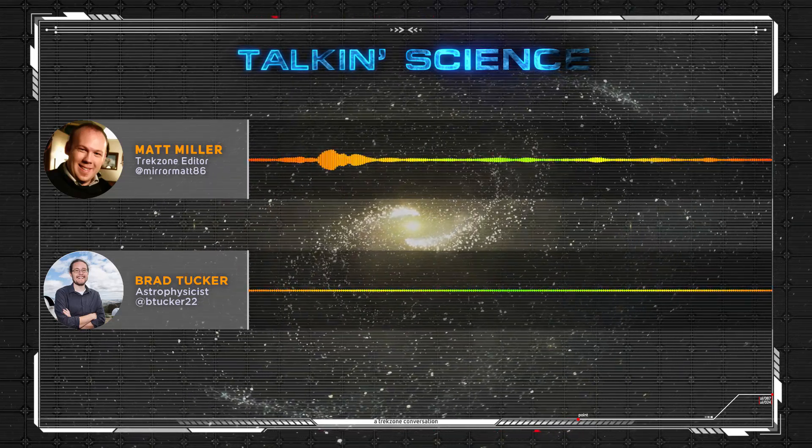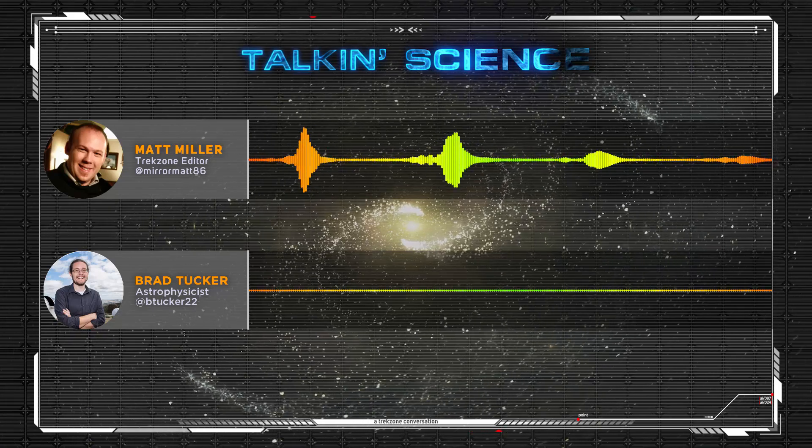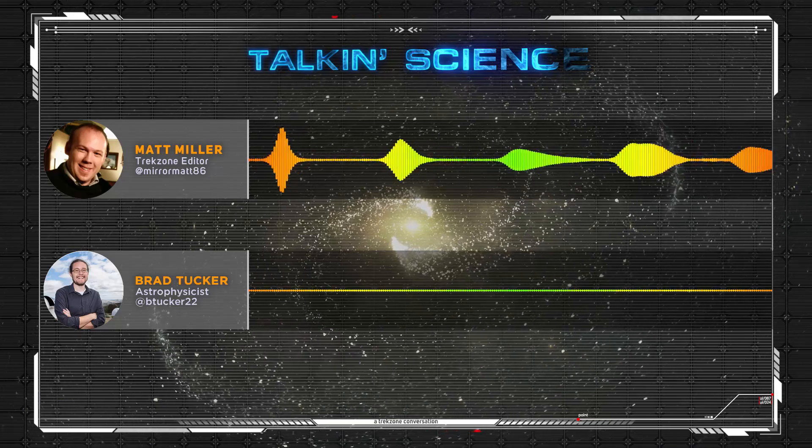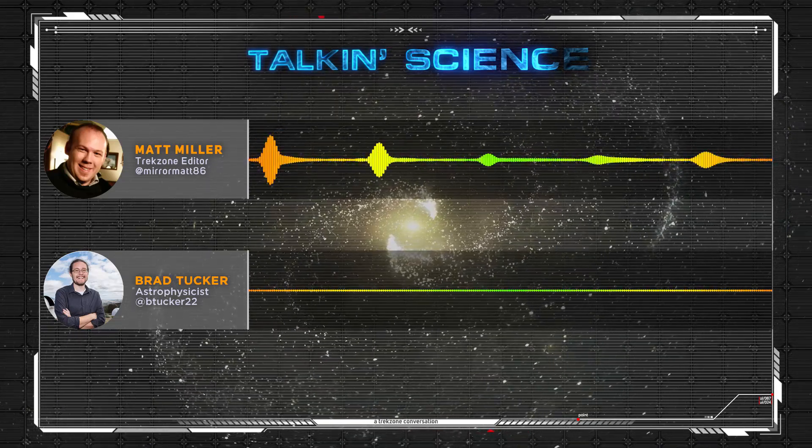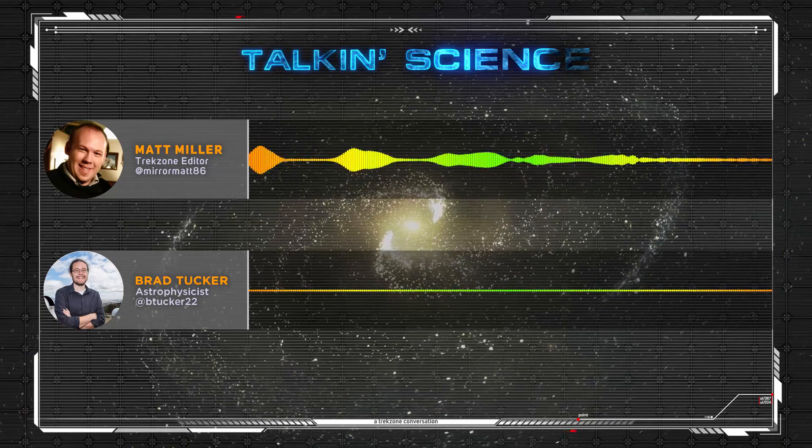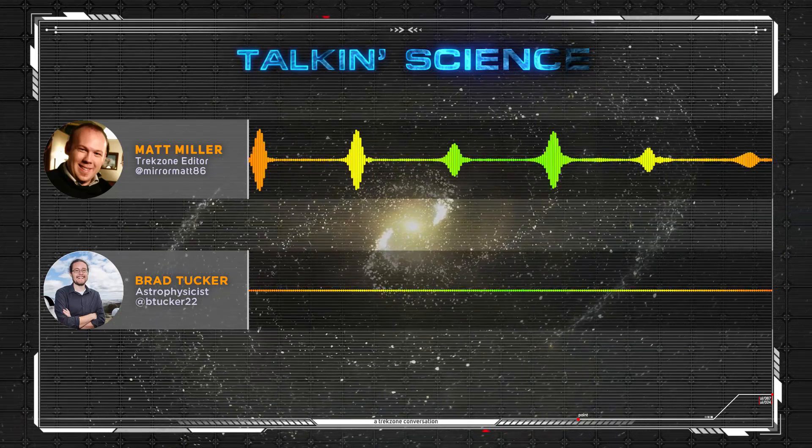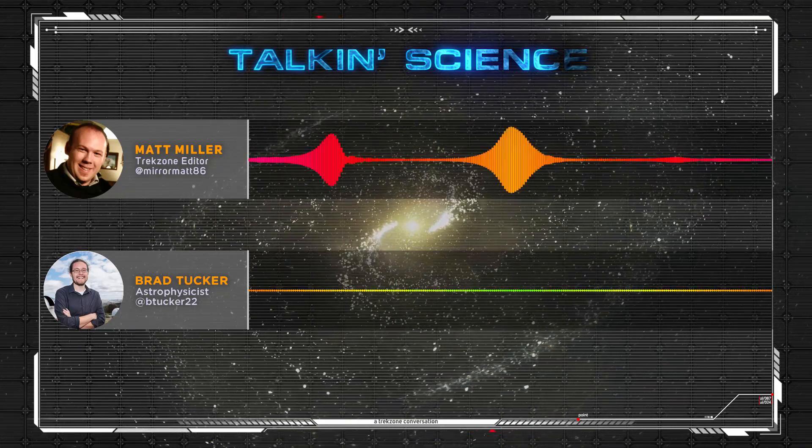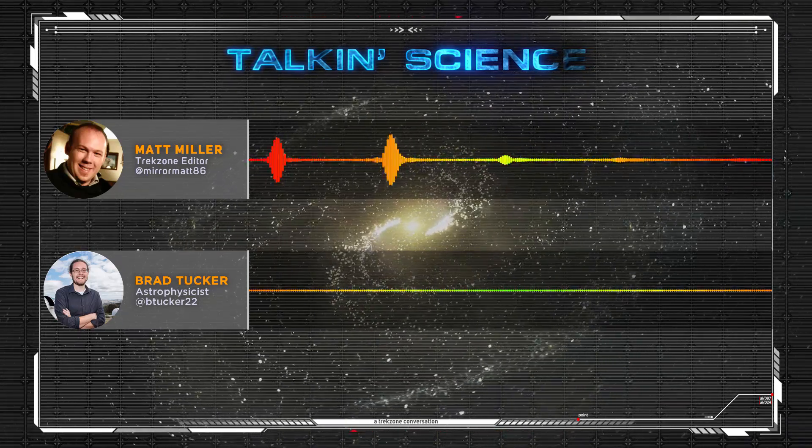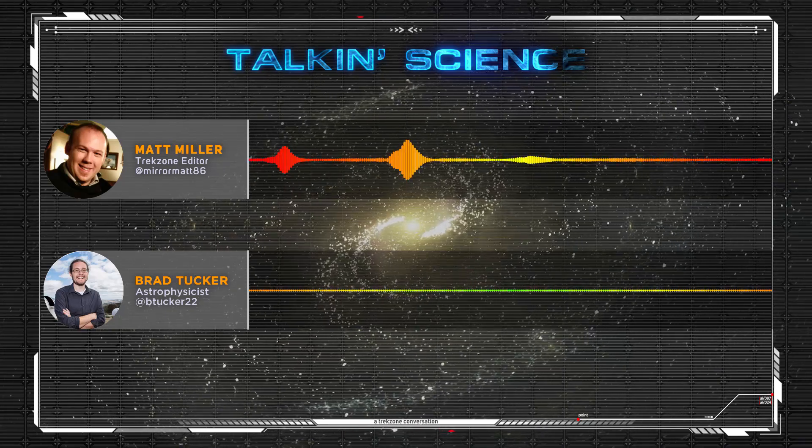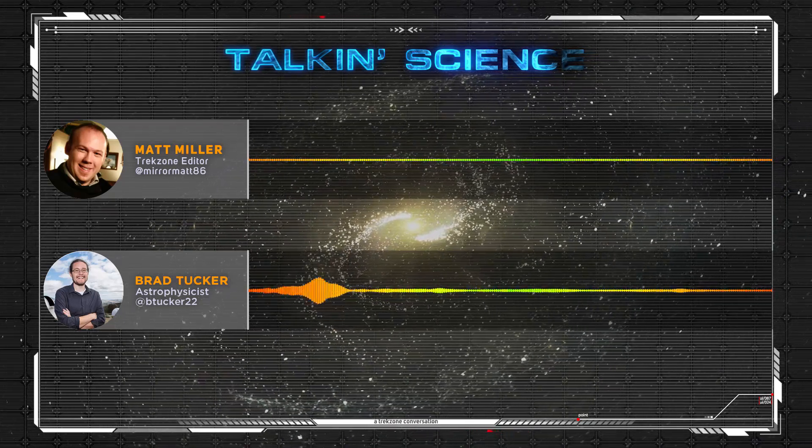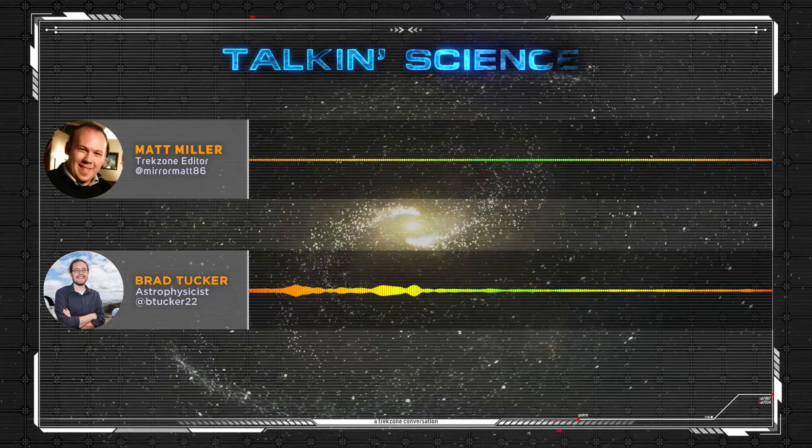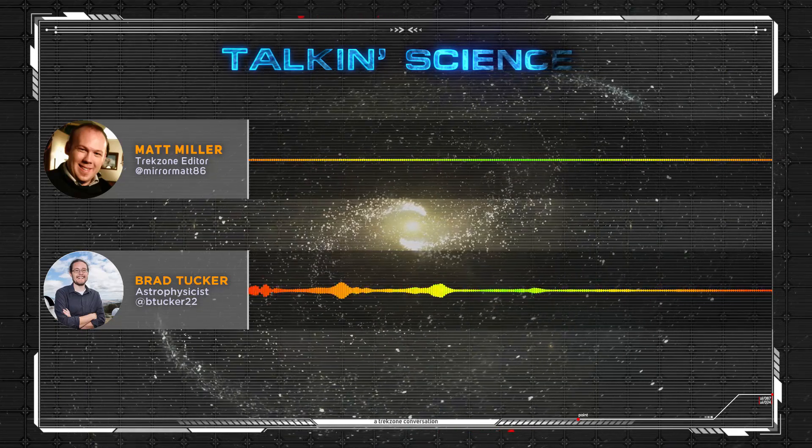Well, something that is a little closer to home is our return to the Moon. A couple of months ago we mentioned on the show that Mike Pence, the Vice President, had directed NASA to escalate the timeline to 2024. There's a little bit of a manifest that's come out or has been leaked. It's a curious one. What are your thoughts on NASA's plans?